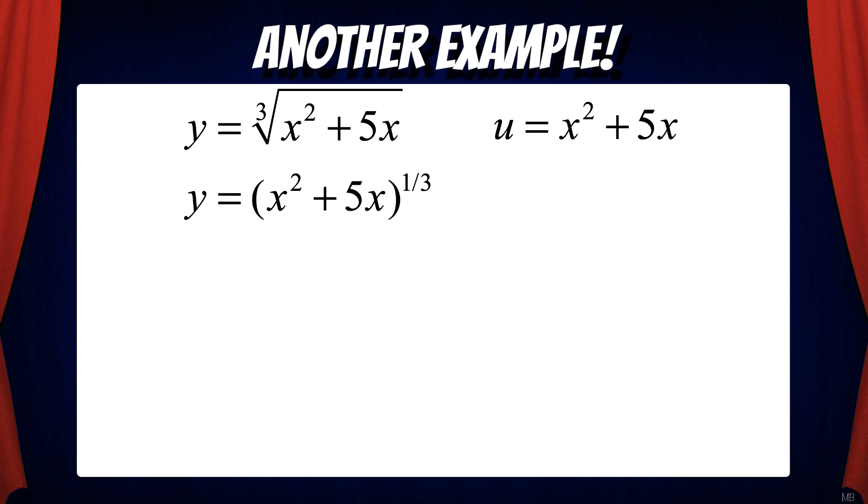Now we can take the derivative of y with respect to u. That gives us 1/3 u to the negative 2/3 power. Then we also take the derivative of u with respect to x, which is just 2x plus 5.